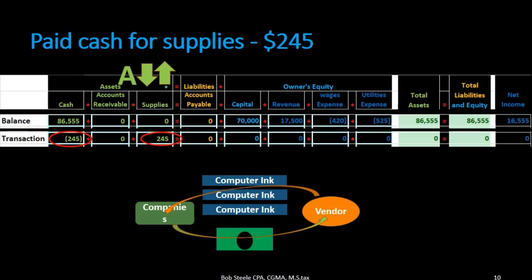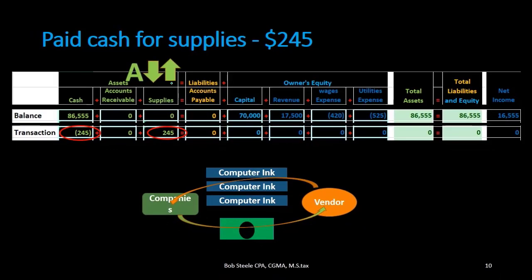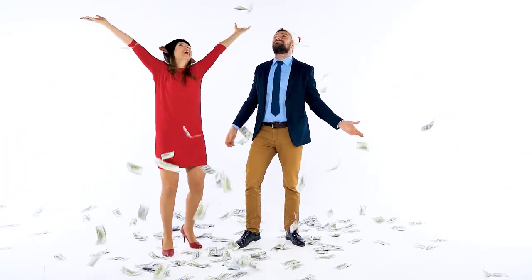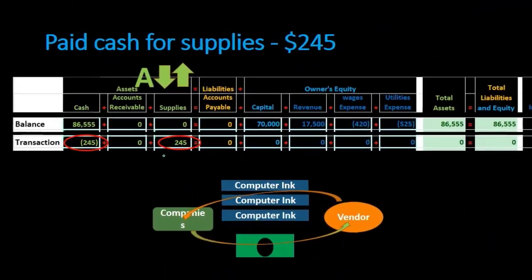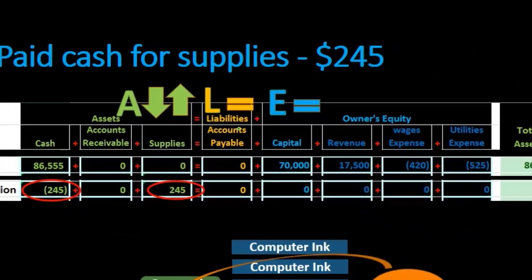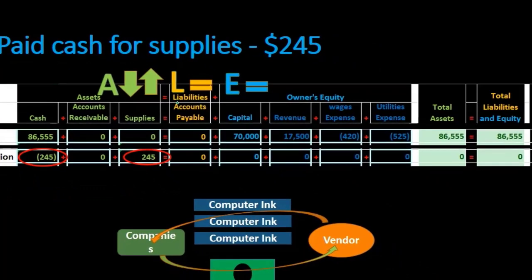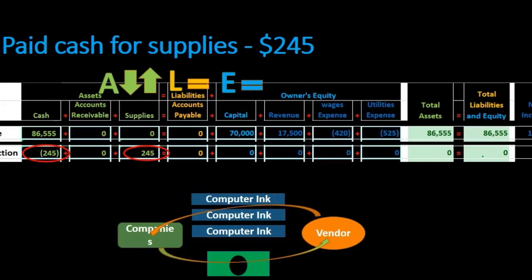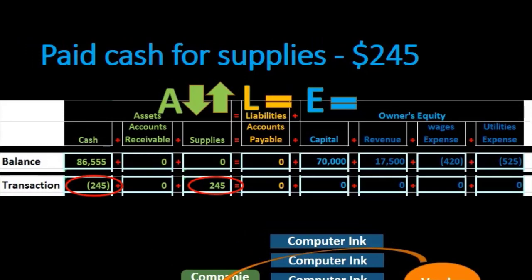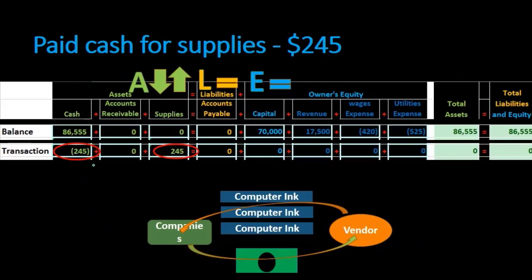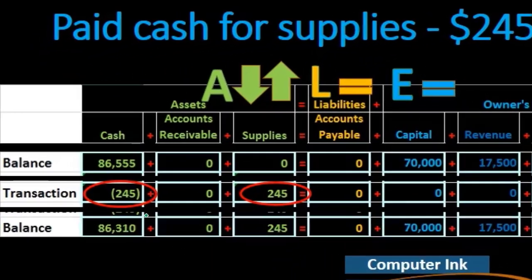This is an unusual transaction in that both sides of the equal sign change on the same side: one asset goes down and another goes up. When asked about the effect on the accounting equation, remember that cash is decreasing assets but supplies is increasing assets — there's no net effect on total assets, liabilities, or equity, and no impact on net income.